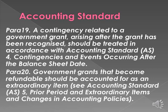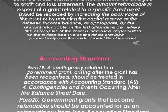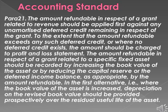Para 21: The amount refundable in respect of a grant related to revenue should be applied first against any unamortized deferred credit remaining in respect of the grant. To the extent that the amount refundable exceeds any such deferred credit, or where no deferred credit exists, the amount should be charged to the profit and loss statement. The amount refundable in respect of a grant related to a specific fixed asset should be recorded by increasing the book value of the asset or by reducing the capital reserve or the deferred income balance, as appropriate, by the amount refundable. In the first alternative — where the book value of the asset is increased — depreciation on the revised book value should be provided prospectively over the residual useful life of the asset.